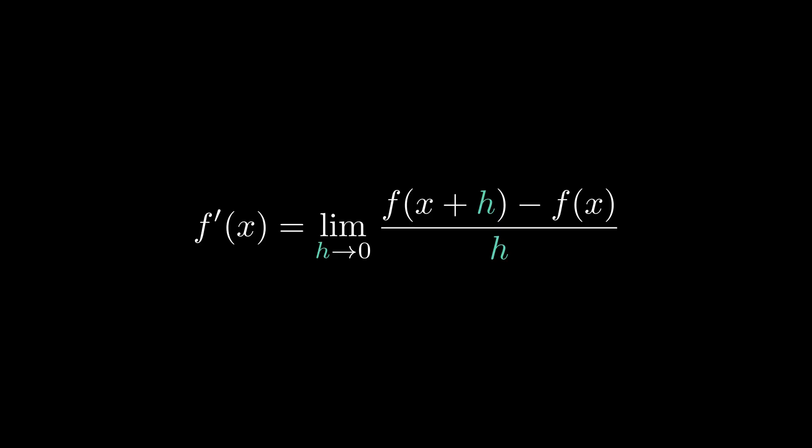Previously in our last video in our derivative series, we went over this definition, which states that f prime of x is equal to the limit as h approaches 0 of f of x plus h minus f of x all over h. This definition essentially provides you the formula to calculate the derivative of a function at any point. So if you want to find the derivative at x equal to 1, 0, negative 1, or 100, you can plug in what x is into this formula and it provides you basically the slope.